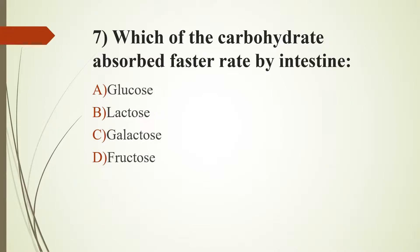Seventh question: Which carbohydrate is absorbed at the fastest rate by the intestine? Option A, glucose. Option B, lactose. Option C, galactose. Option D, fructose. The answer is Option C, galactose. Digestion of carbohydrates starts from the mouth; saliva contains salivary amylase which hydrolyzes starch. Absorption rate is maximum for galactose, moderate for glucose, and least for fructose.